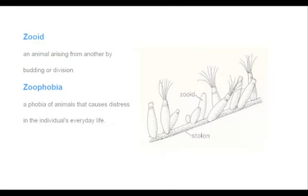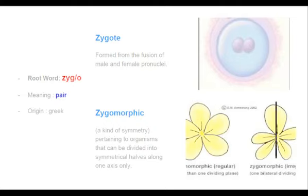Zoophobia: 'phobia' means fear, and 'zoo' is related to animals, so zoophobia is a phobia of animals that causes distress in an individual's everyday life. Many of us are phobic to animals such as lizards and cockroaches. People who are phobic to wild animals — that situation is called zoophobia.